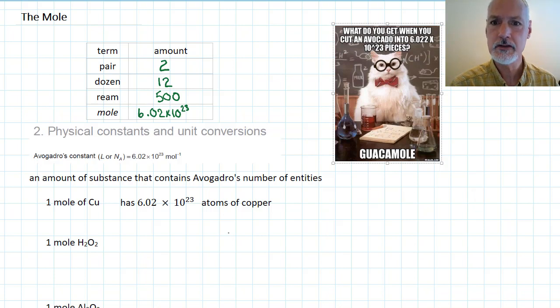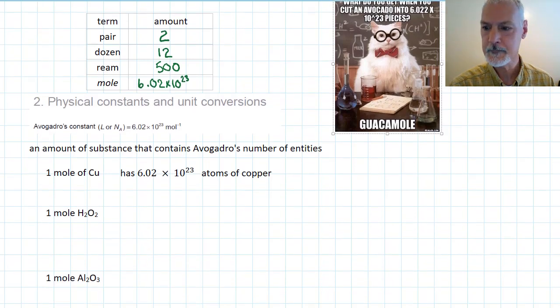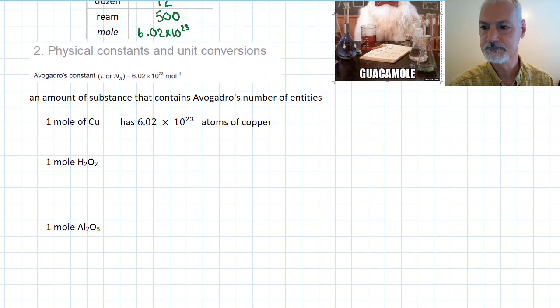Now, I mentioned particles. The word particles and entities can be used interchangeably. Let's look at a couple of examples of how the word can change its meaning. If I have one mole of copper, copper being a metal, exists as atoms. So that would mean I would have Avogadro's number, 6.02 times 10 to the 23rd atoms of copper. In this case, the word entities represents atoms.